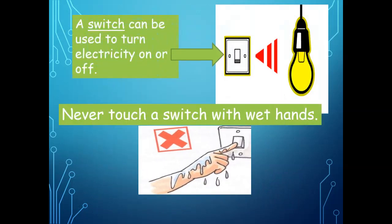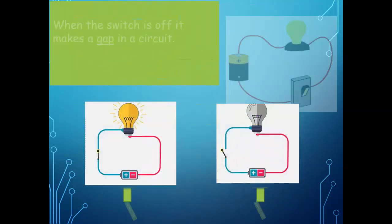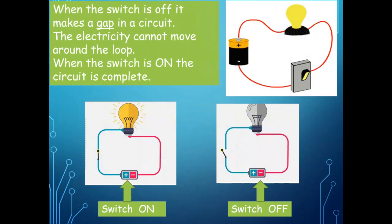In this picture, the arrow is pointing towards a switch. A switch can be used to turn electricity on or off. Never touch a switch with wet hands. When the switch is off, it makes a gap in the circuit and the electricity cannot move around the loop. When the switch is on, the circuit is complete and the bulb lights up. In the second picture, the switch is off, making a gap in the circuit.